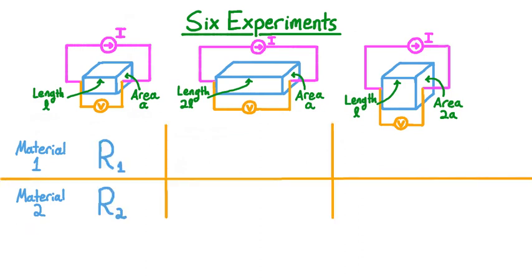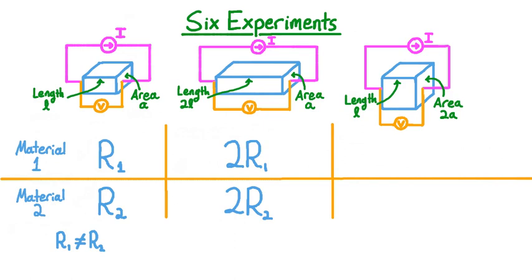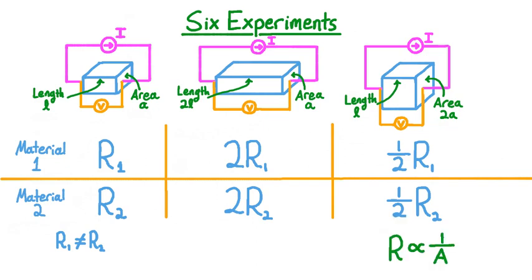For the first setup, which we can think of as our baseline, we'll measure a resistance of R1 for Material 1 and R2 for Material 2. The particular values of these resistances are not important, but what is important is that they are different. For the second setup, where the block is twice as long, the measured resistance doubles for both materials. On the other hand, in the third setup where the cross-sectional area is doubled, we find that the resistance for both materials is halved. Because doubling the cross-sectional area leads to half the resistance regardless of the material, we know that the resistance of the block must be inversely proportional to the cross-sectional area. Similarly, if doubling the length leads to double the resistance regardless of the material, the resistance of the block must be directly proportional to its length.